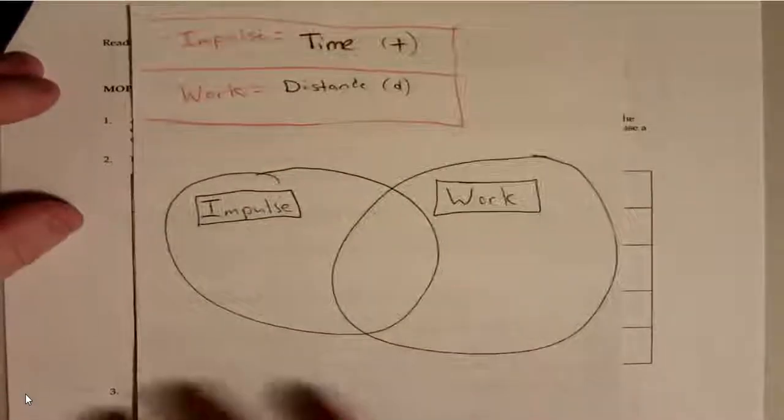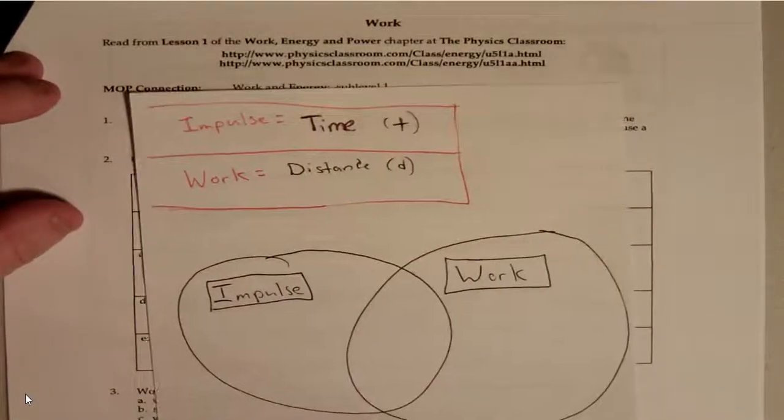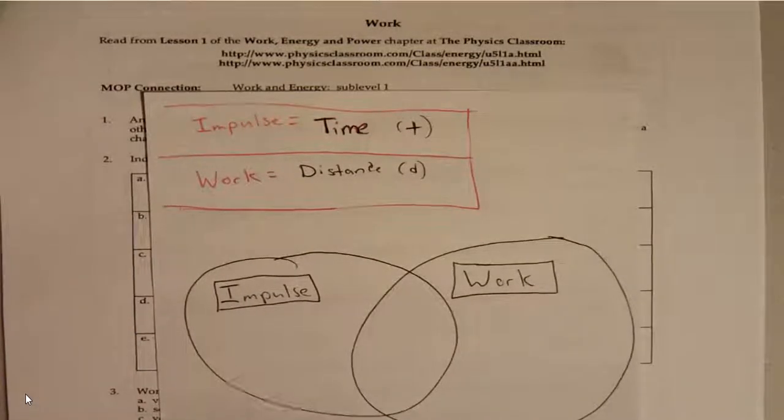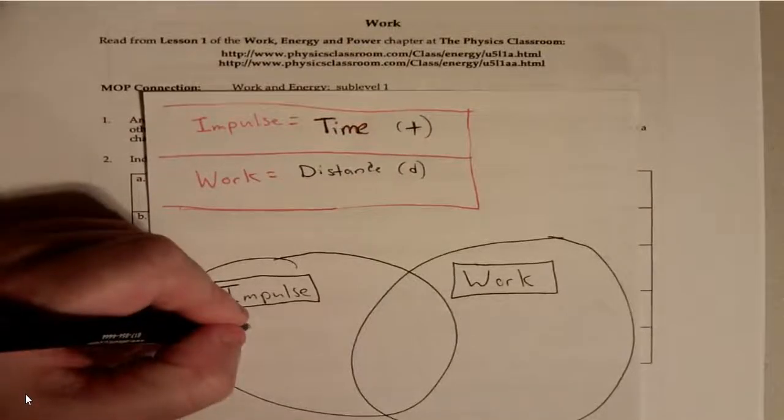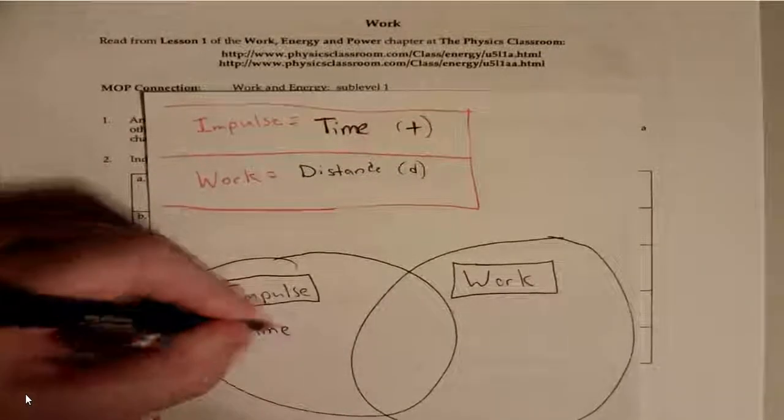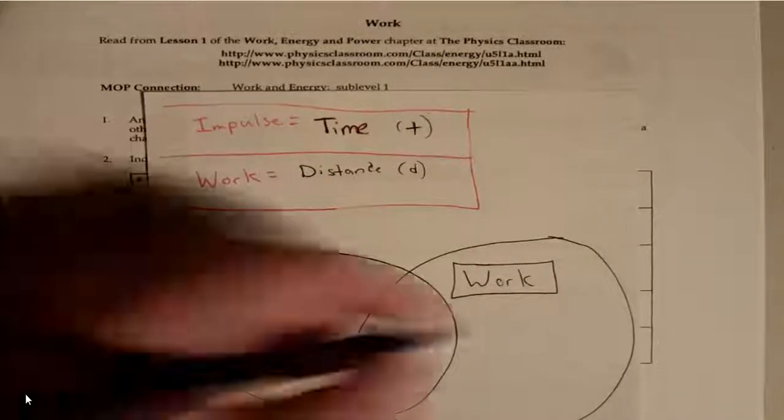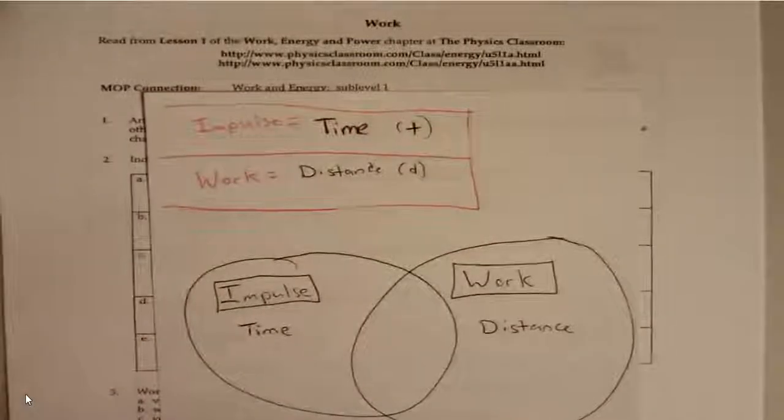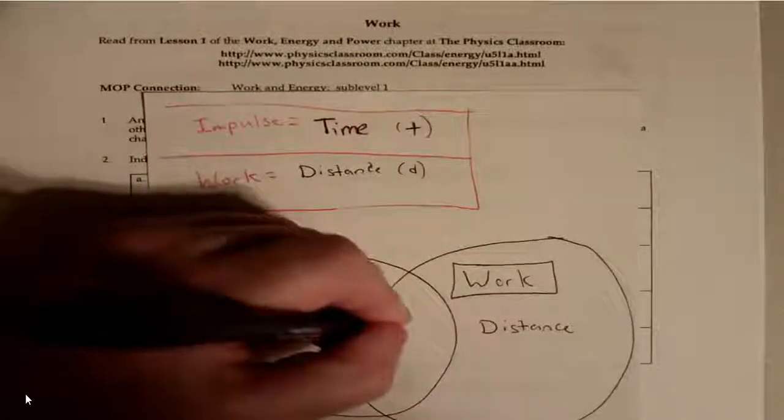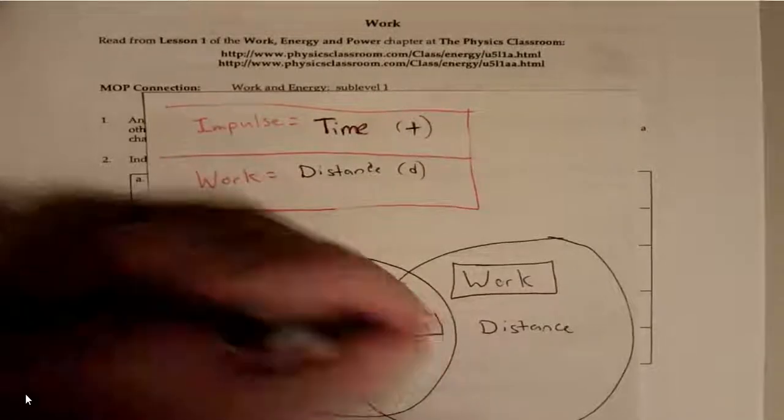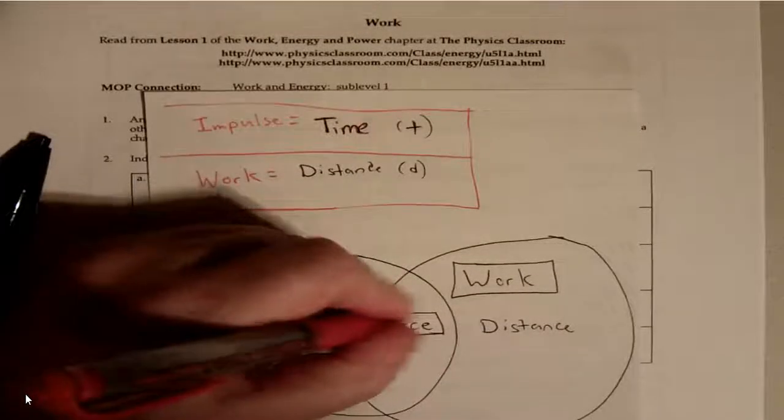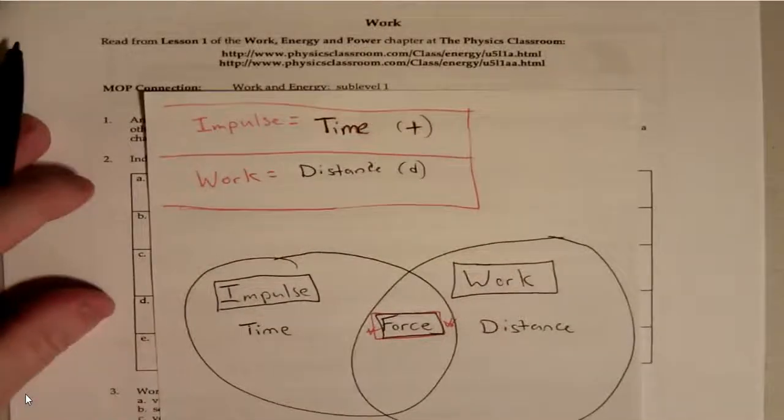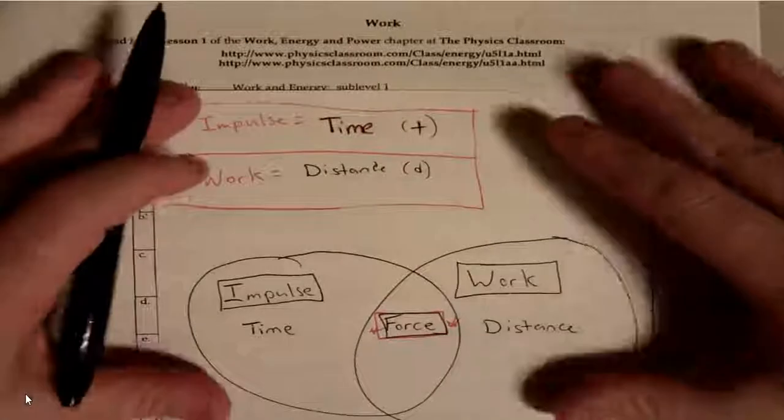So let's diagram here. Can we still see that? Yeah, but that's okay. So impulse deals with going over a period of time. Work deals with distance. And they both deal with force. So they both deal with force - one deals with distance, one deals with time.